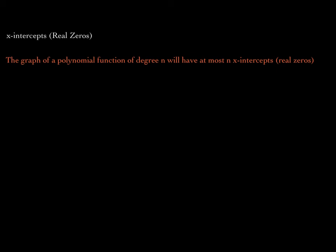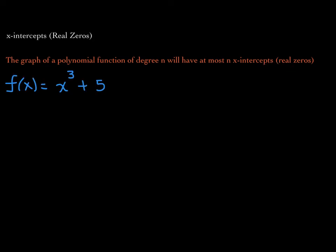One of the last things to emphasize in this lesson is that the x-intercepts of the graph of a polynomial function are also called the real zeros. The graph of a polynomial function of degree n will have, at most, n x-intercepts, or n real zeros.